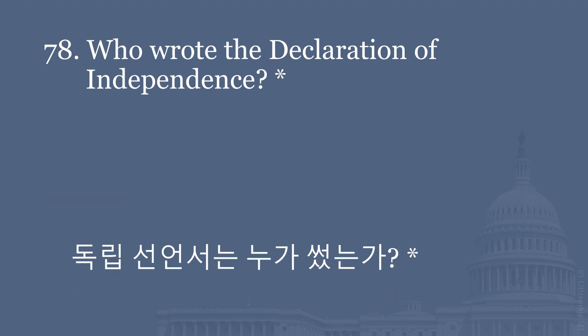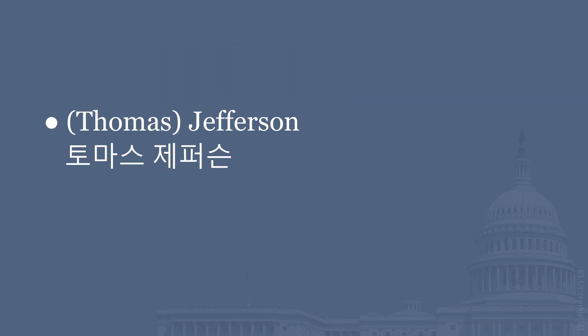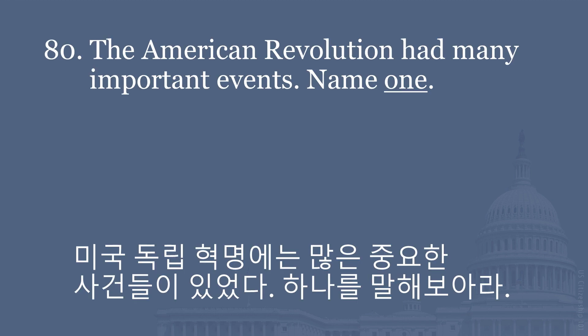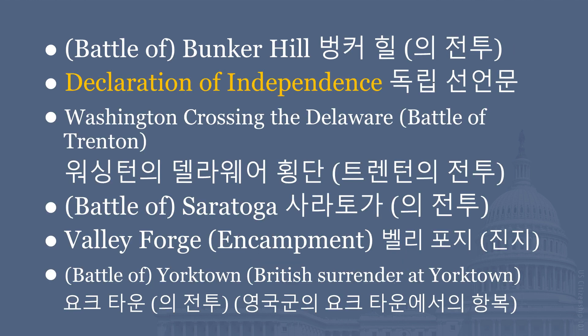Who wrote the Declaration of Independence? Thomas Jefferson. When was the Declaration of Independence adopted? July 4, 1776. The American Revolution had many important events. Name one. Battle of Bunker Hill. Declaration of Independence. Washington crossing the Delaware. Battle of Trenton. Battle of Saratoga. Valley Forge Encampment. Battle of Yorktown. British surrender at Yorktown.